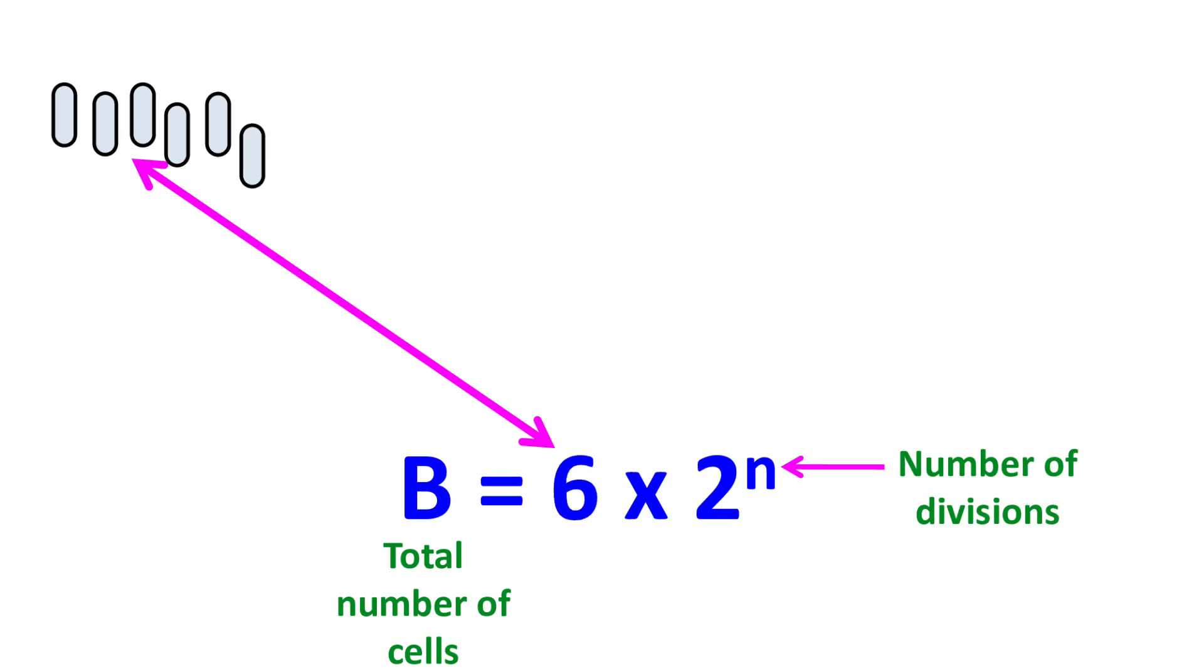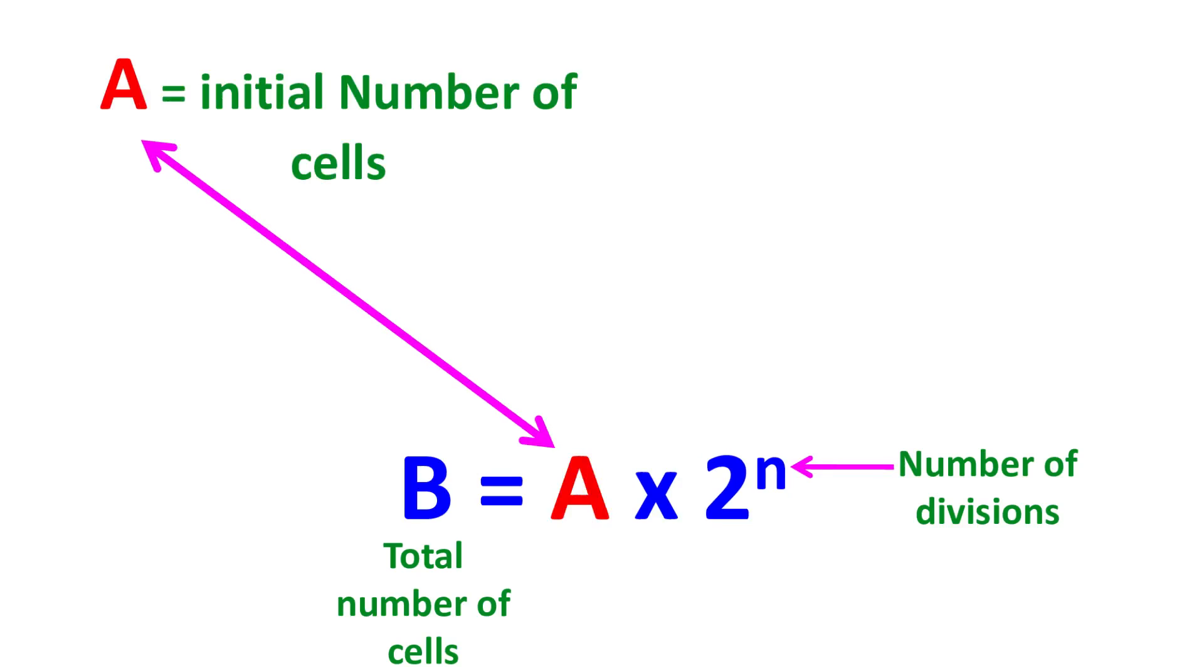Hence, total number of cells after n number of cell division can be written as B equals A times two raised to n, where A is the initial number of cells.